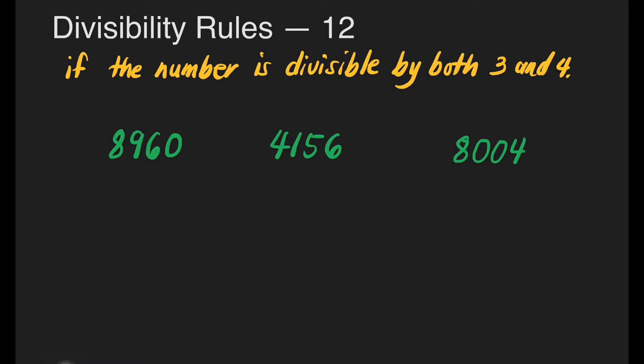Let's check the first number, 8,960. Let's add all the digits: 8 plus 9 plus 6 plus 0. 8 plus 9 is equal to 17, plus 6 is 23, plus 0 is 25. So 25 is not divisible by 3, which means this whole number is not divisible by 12.